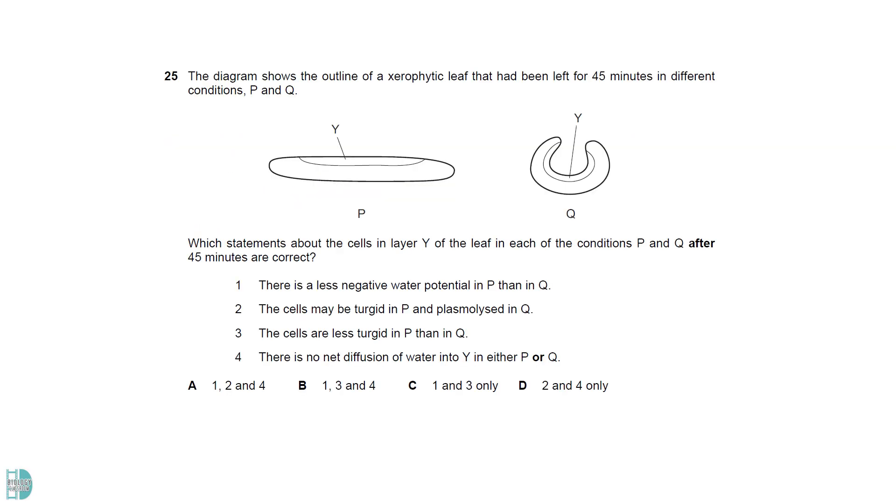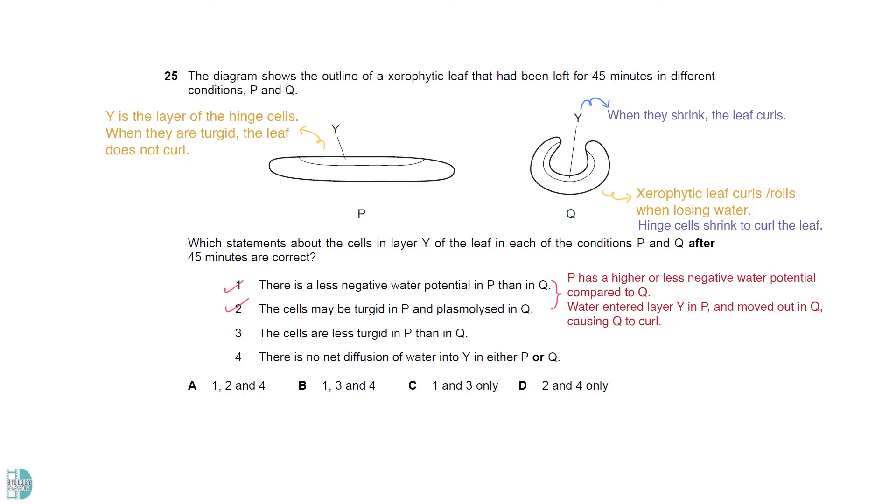There are a few things you need to know about a xerophytic leaf to answer the question. First, it curves or rolls when losing water. Secondly, this effect is due to the hinge cells, which shrink to curve the leaf. In the diagram, Y is the layer of the hinge cells. When they are turgid, the leaf does not curve. When they shrink, the leaf curves towards them. Hence, 1 and 2 are correct.